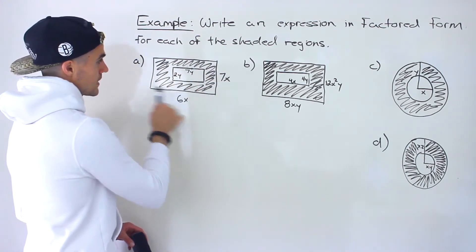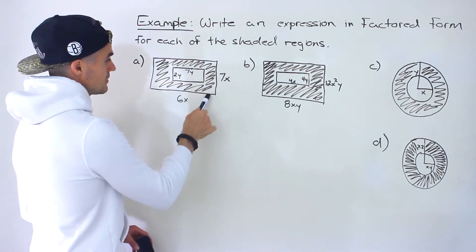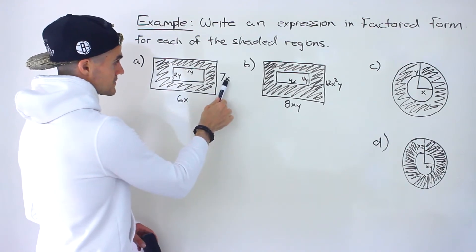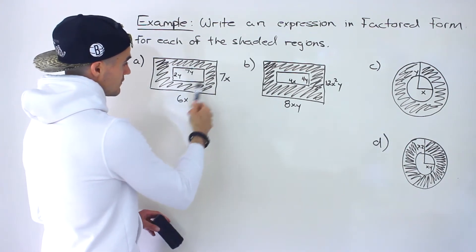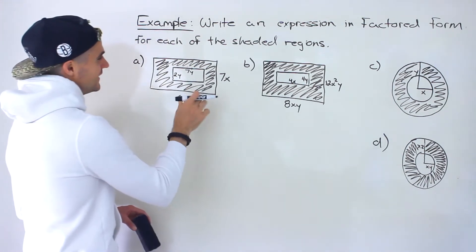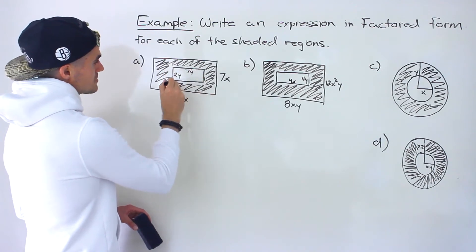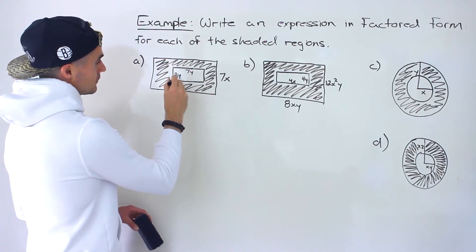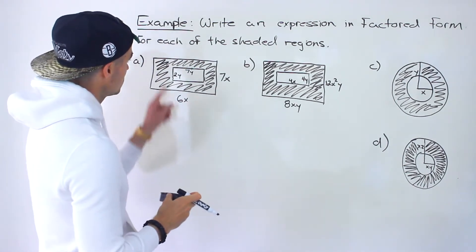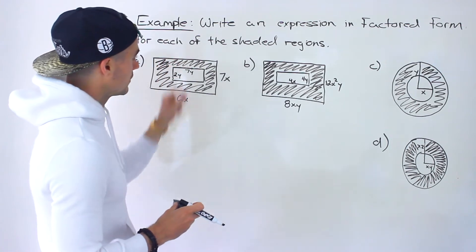Notice that we have two rectangles: a large rectangle and a smaller rectangle. The large rectangle has a length of 6x and a width of 7x. Over here we have a smaller rectangle with length 2y and width 7y. We need to find an expression for the shaded area.